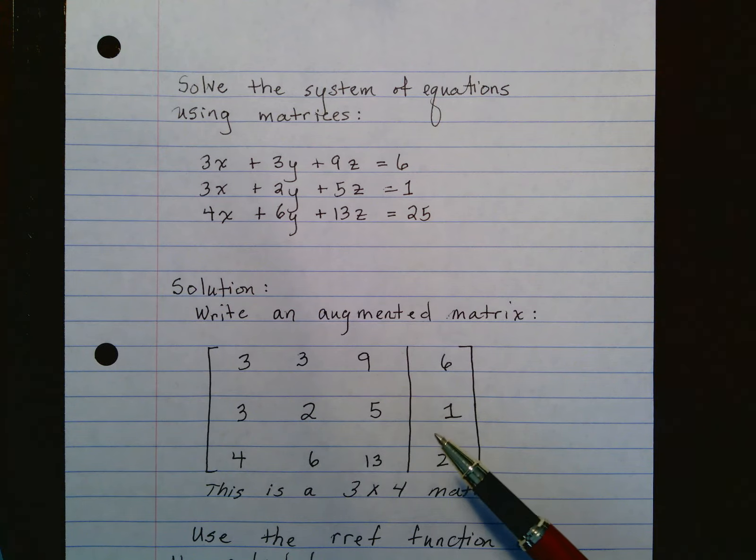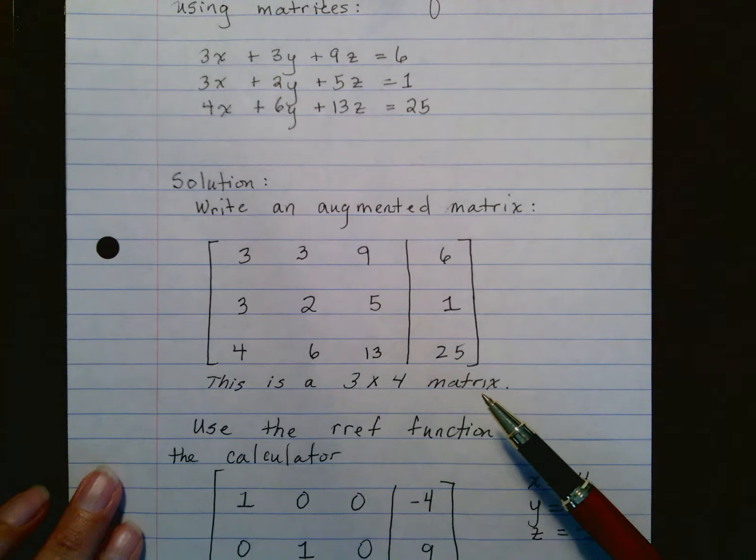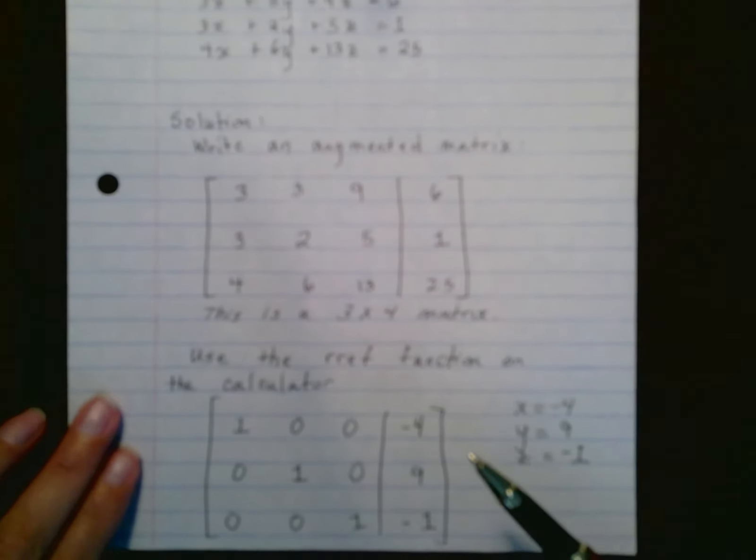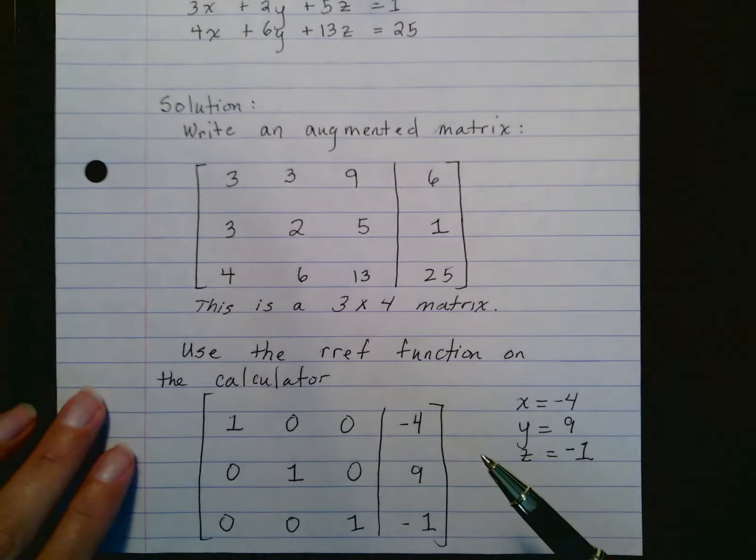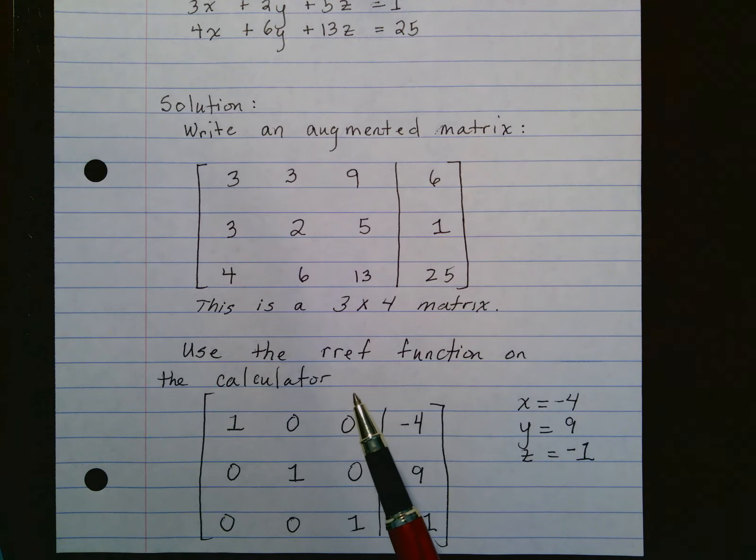First we're going to put this system into an augmented matrix. Notice that this is a 3x4 matrix, and we can use the graphing utility and the function called RREF. We will end up with the reduced row echelon form of this matrix, which will give us the solution.